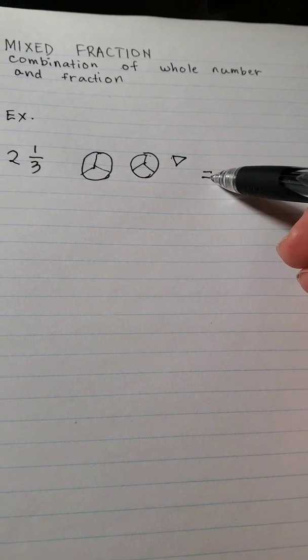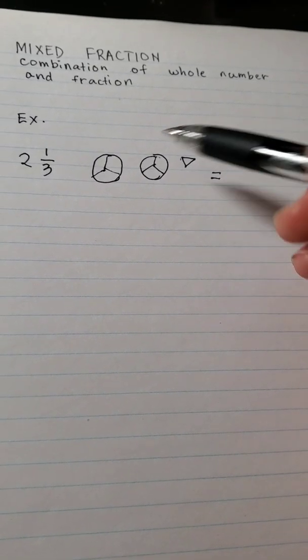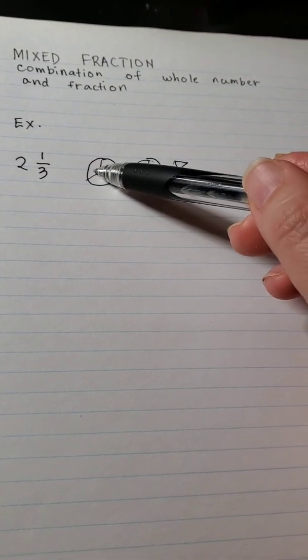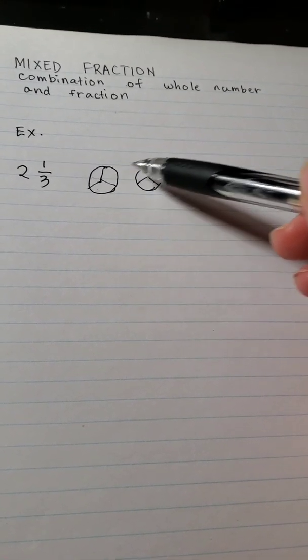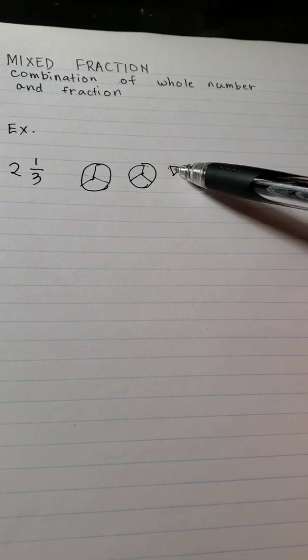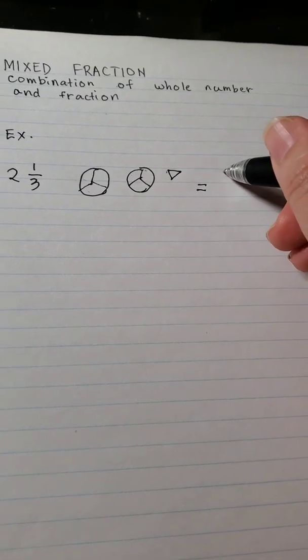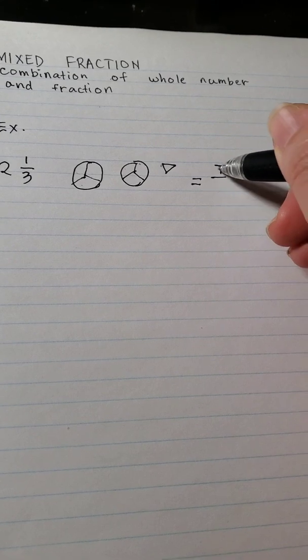So to get the fraction of that, you just need to count the number of slices. So 1, 2, 3, 4, 5, 6, 7. So the answer is 7 over 3.